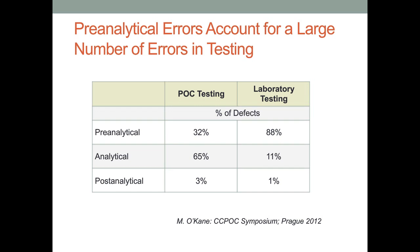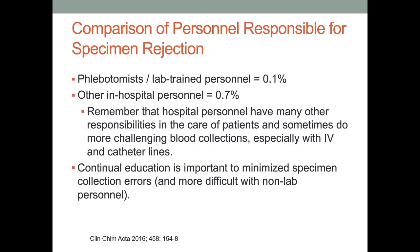When comparing personnel responsible for specimen rejection, it is relatively uncommon for rejected specimens to be caused by a phlebotomist or lab-trained person. The rate is higher, but still small, for other in-hospital personnel such as nurses, perfusionists, anesthesia techs, and doctors, who often have other responsibilities in patient care and face more challenging blood collection such as from catheters or IV lines. Continual education is important to minimize collection errors, though having less influence over non-lab personnel makes this more difficult.